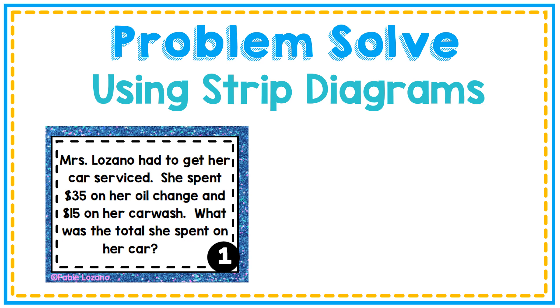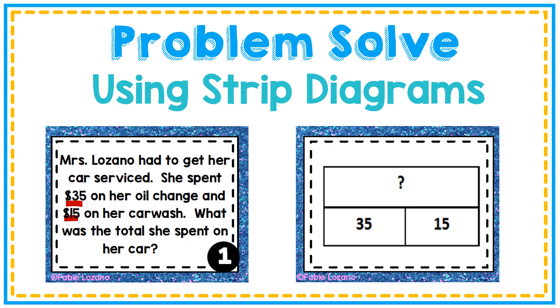Mrs. Lozano had to get her car serviced. She spent $35 on her oil change and $15 on her car wash. What was the total she spent on her car? Here's an example of what the strip diagram would look like. $35 was for the oil change - that's a part. $15 was her car wash - that's also a part. And these two parts, I'm going to use them to find the whole. I'm going to do some mental math here and add them together in my head. I know that the total I spent on that was $50. So that is my whole. That's what I was missing.